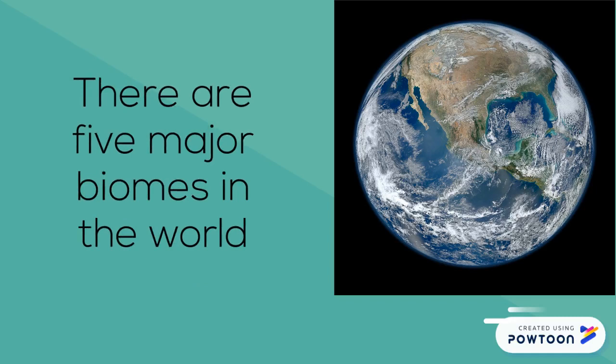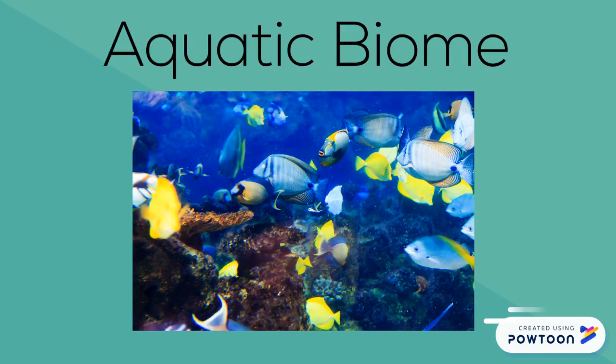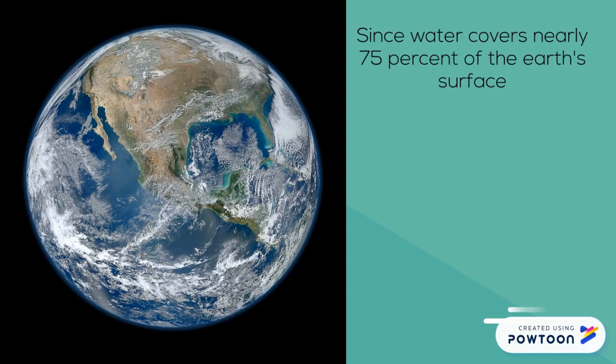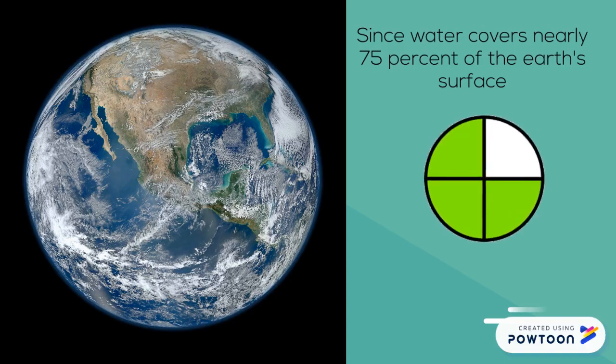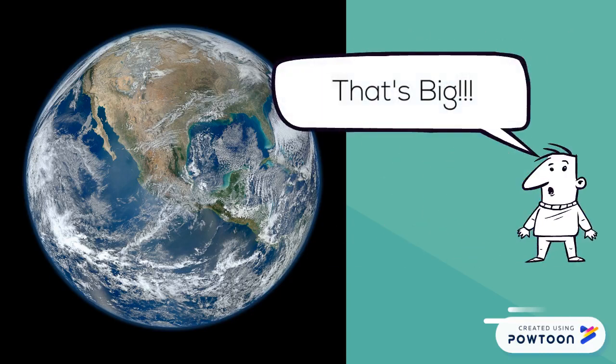There are five major biomes in the world. Today, we'll cover the aquatic biome. Since water covers nearly 75% of the Earth's surface in the forms of oceans, lakes, rivers, etc., the aquatic biome is definitely the largest biome out there.